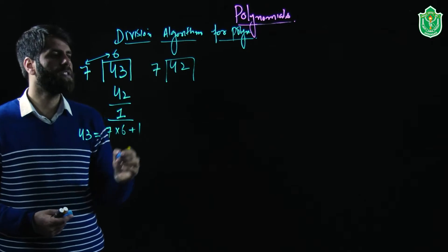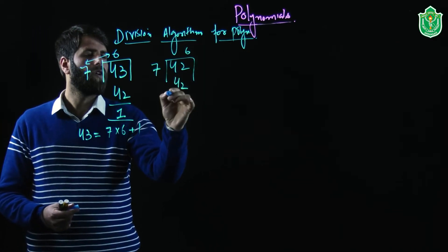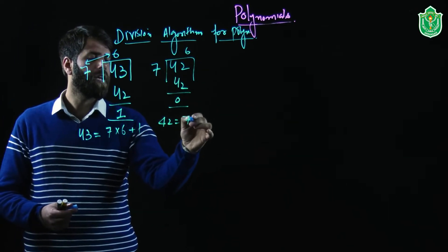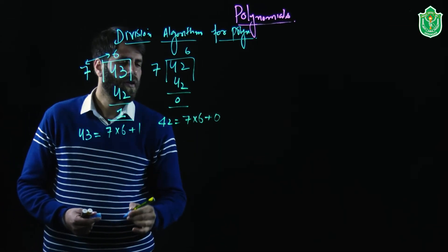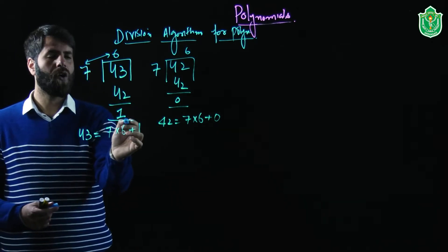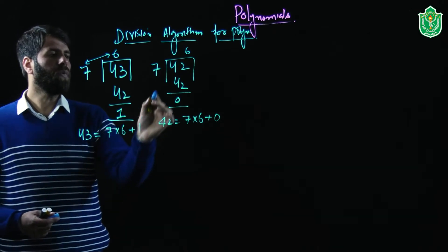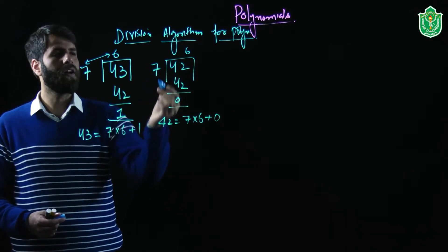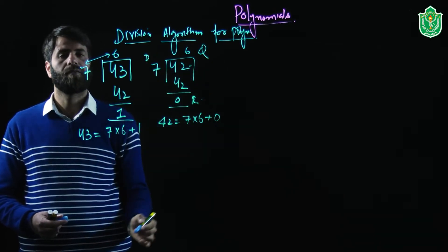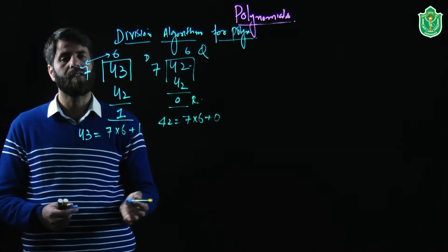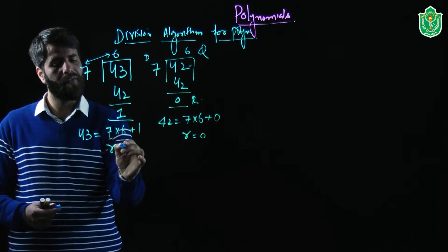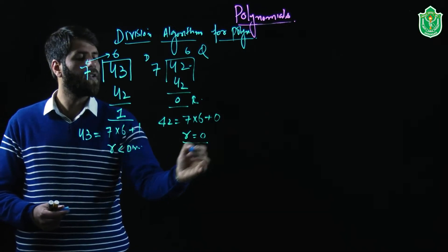Taking another example: dividing 42 by 7. On dividing, 7 sixes are 42 and remainder is 0. So 42 equals 7 into 6 plus 0. The condition is that the remainder will be either less than the divisor or equal to 0. When remainder is 0, it means 7 is a factor of 42.